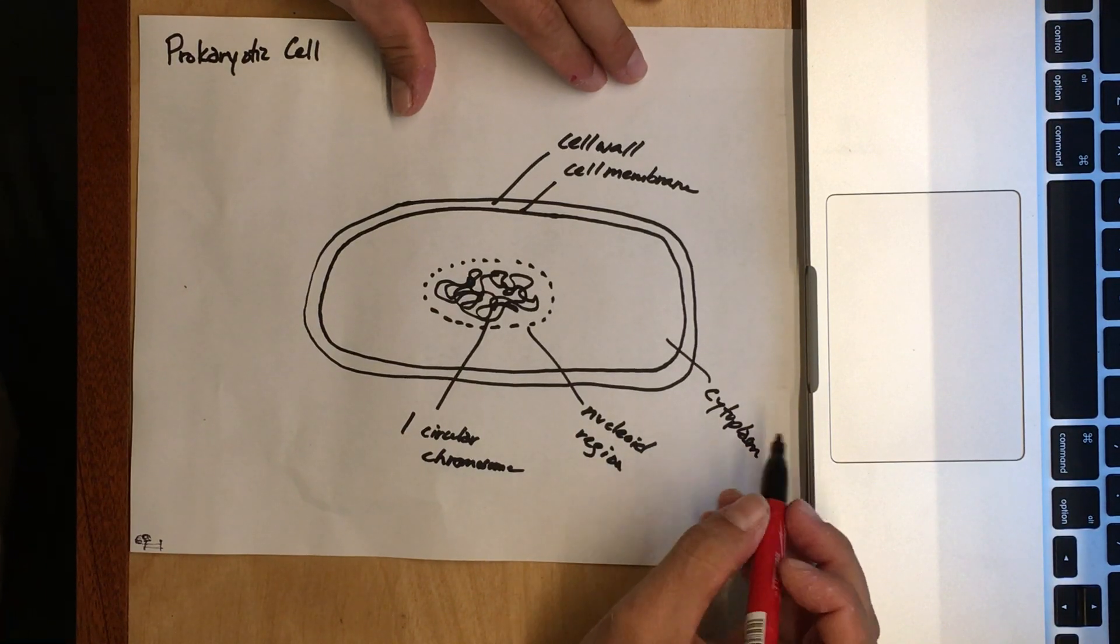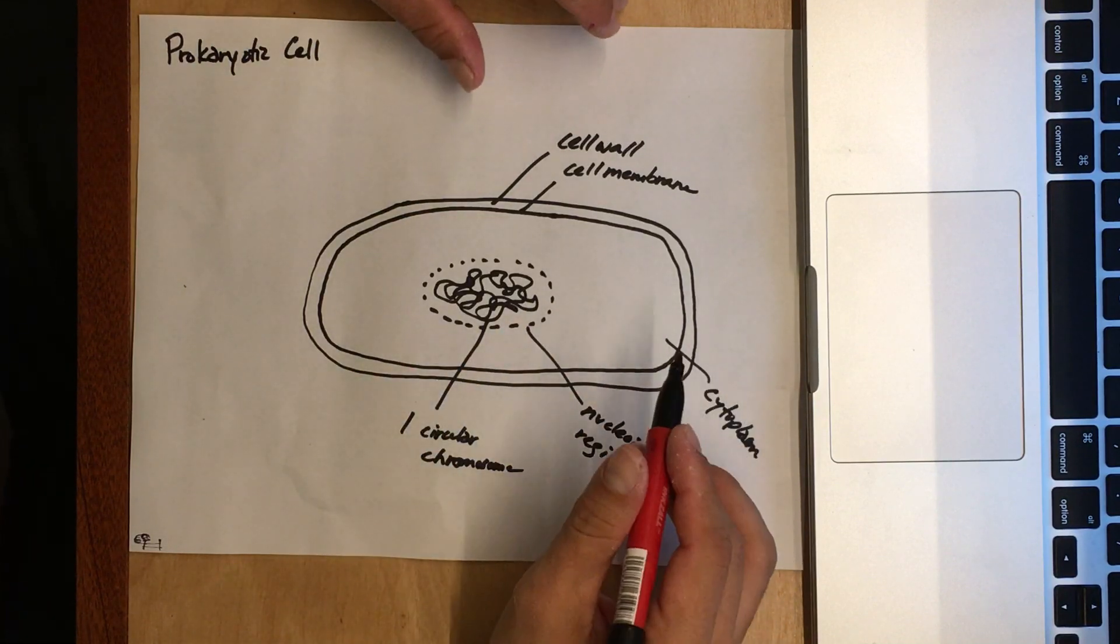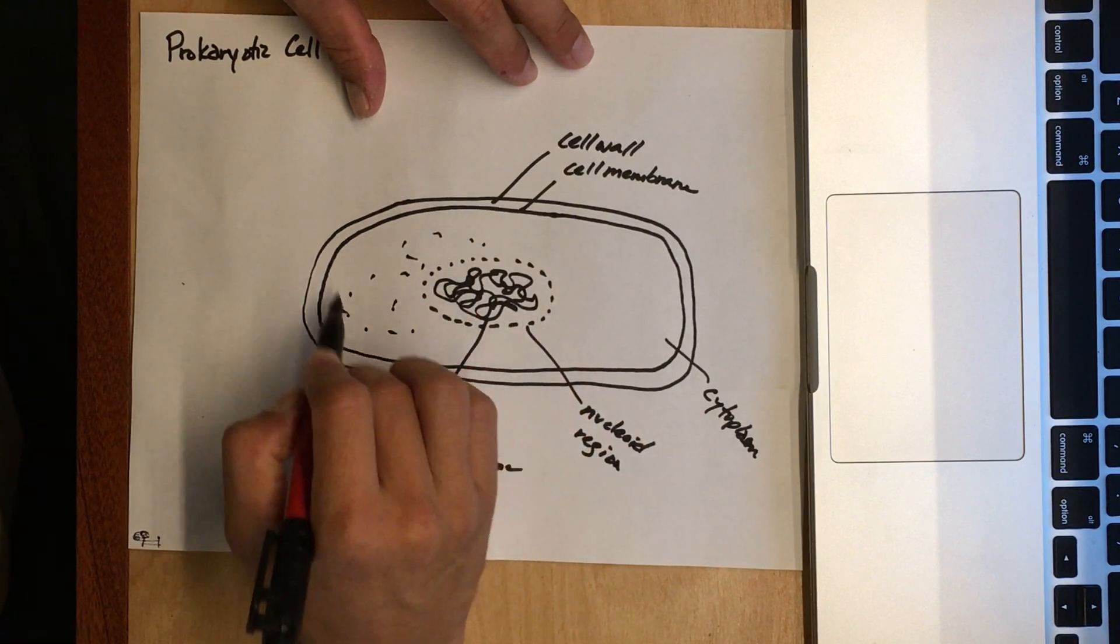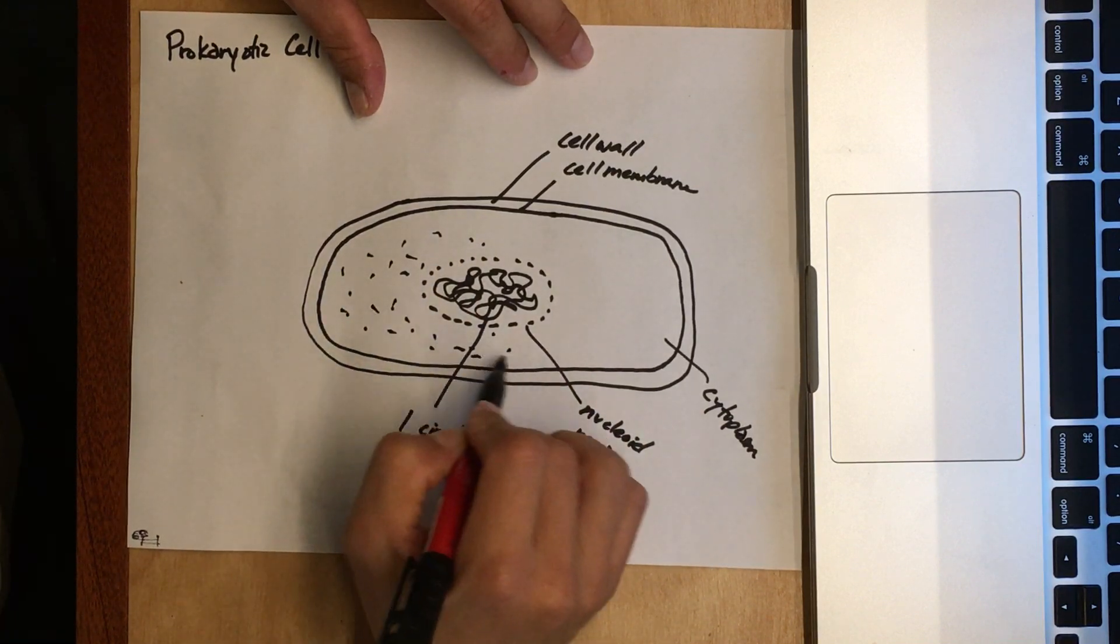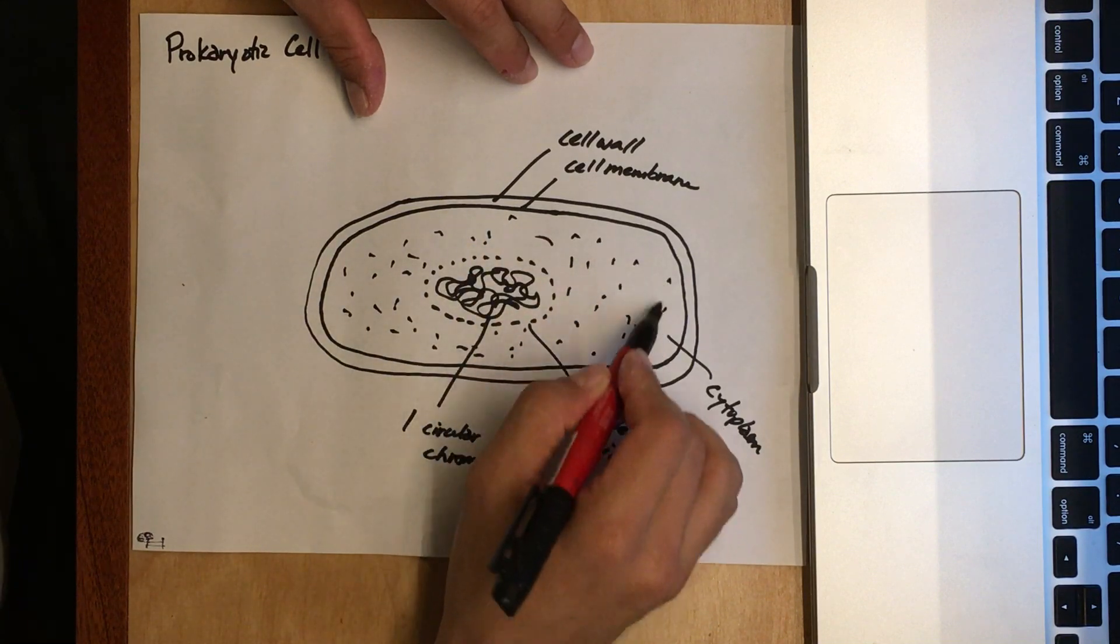This is the liquid interior where you'll find enzymes and key metabolic reactions occurring. All throughout that cytoplasm are these little dots—they're all over the place, jillions of them.